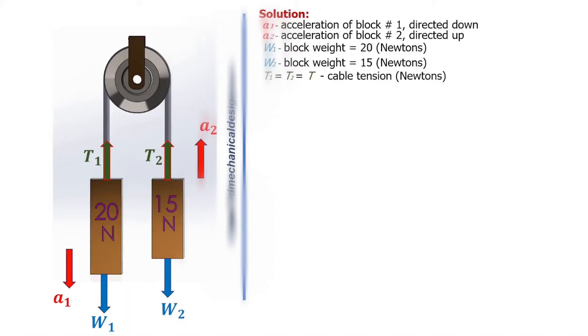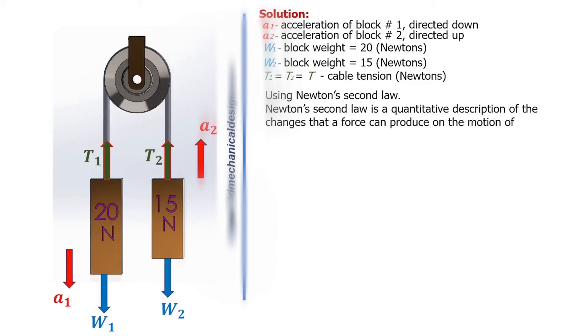Using Newton's second law. Newton's second law is a quantitative description of the changes that force can produce on the motion of a body. For the body whose mass m is constant, it can be written as: